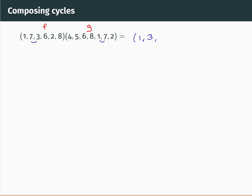Now let's ask what happens to three. G sends three to three because three doesn't appear in the cycle G. And then F sends three to six. So we have one, three, six. Now let's ask where the composition sends six. G sends six to eight and then F sends eight back to one. So we've gone back to one. That means we've completed a cycle.